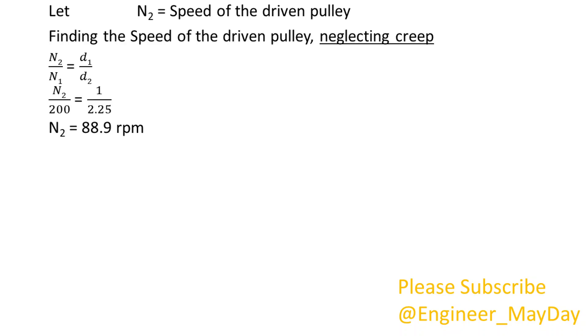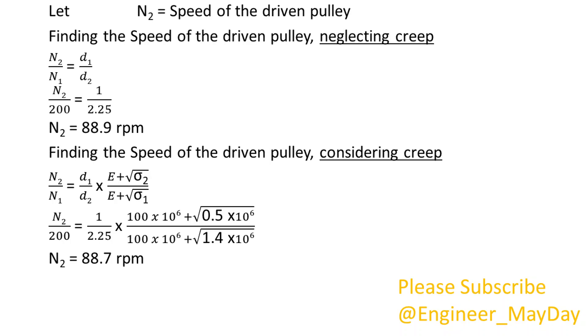Finding the speed of the driven pulley, neglecting creep. N2 equals 88.9 rpm. Finding the speed of the driven pulley, considering creep. N2 equals 88.7 rpm. Finding the speed lost by driven pulley due to creep, which equals 0.2 rpm.